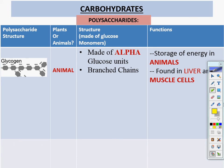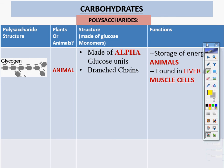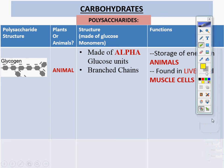The last polysaccharide is glycogen. It's found in animals and is made of alpha glucose. This is your homework — it's a page and a half.